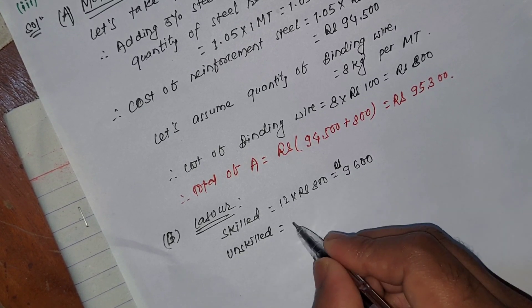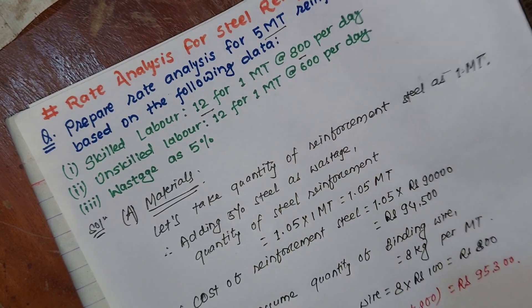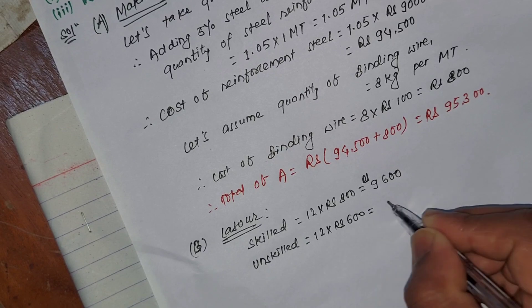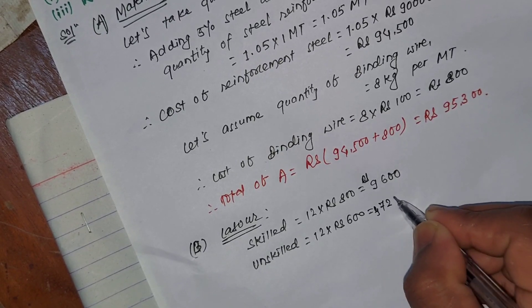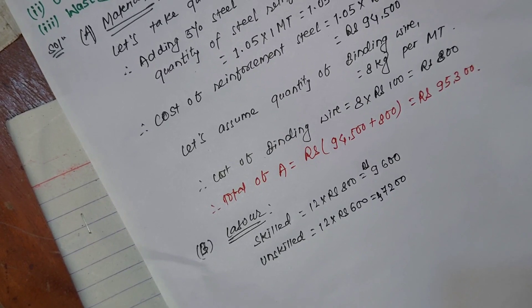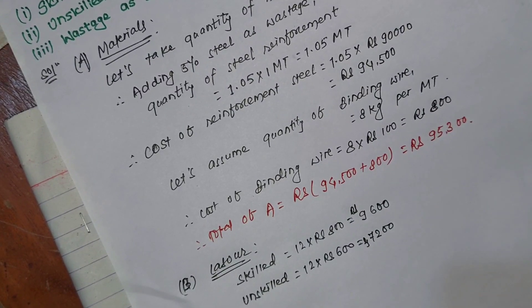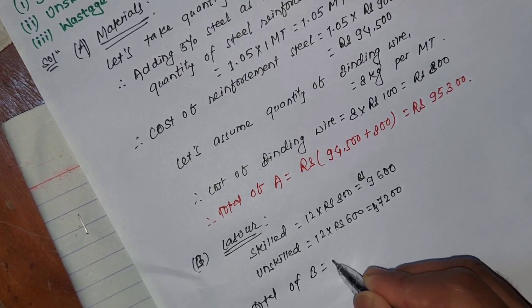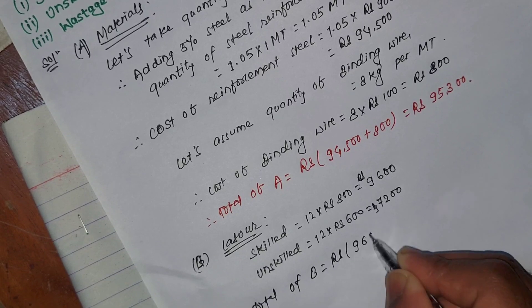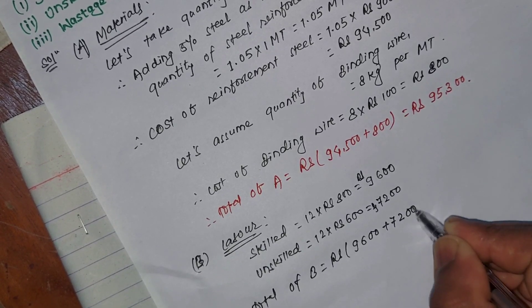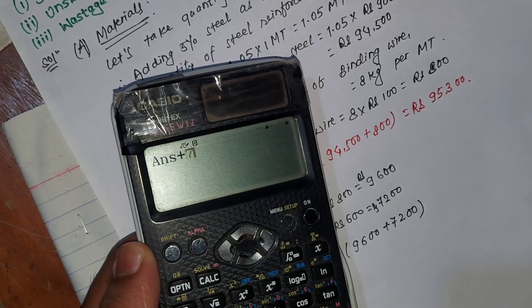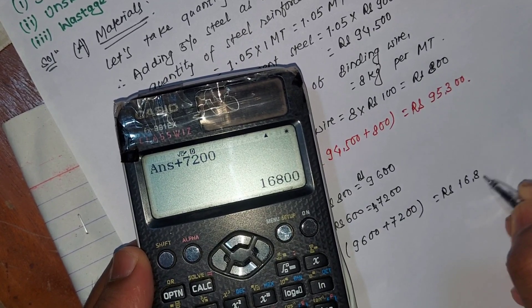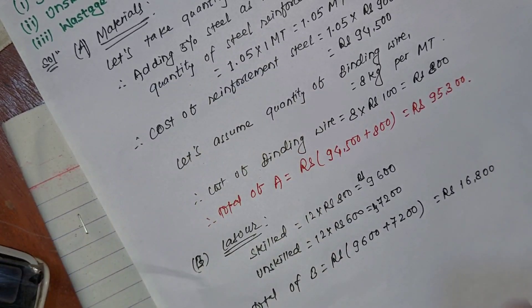Unskilled labor: 12 bars into Rs 600 is equal to Rs 7,200. Total of B is equal to Rs 9,600 plus Rs 7,200, which is equal to Rs 16,800.